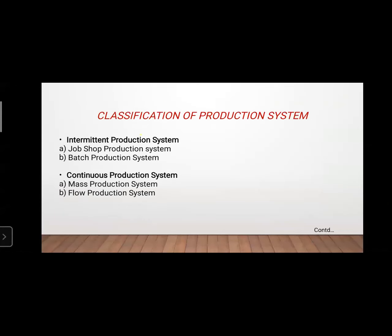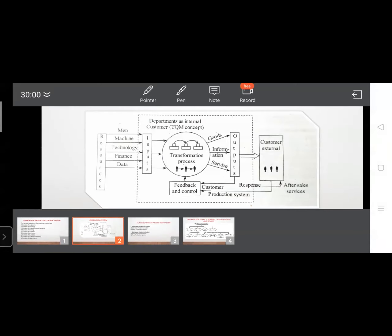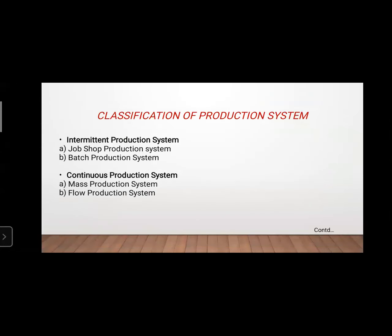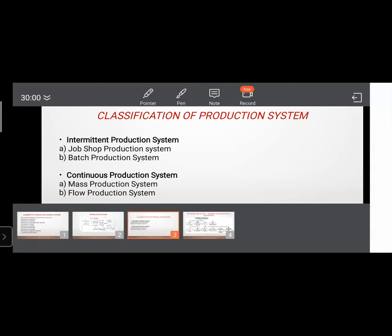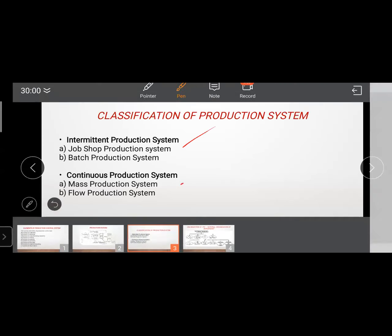The classification of the production system includes two types: intermittent production system and continuous production system. Intermittent production has two subtypes: job shop production system and batch production system. Continuous production system has two subtypes: mass production system and flow production system.